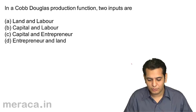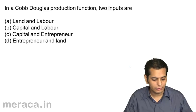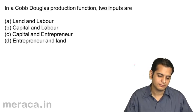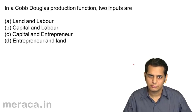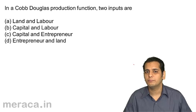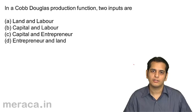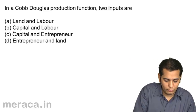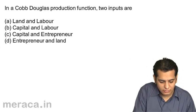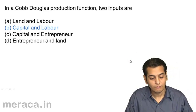In the Cobb-Douglas production function, the two inputs are: a) land and labour, b) capital and labour, c) capital and entrepreneur, or d) entrepreneur and land. The two factors of input considered in their formula are capital and labour. That's the right answer.